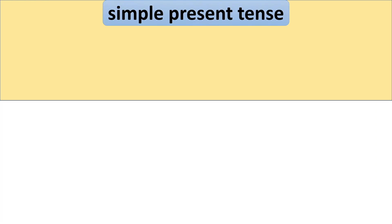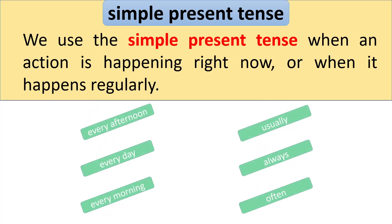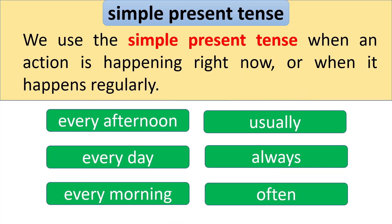Simple Present Tense. We use the simple present tense when an action is happening right now, or when it happens regularly. When you find these time words in a sentence — for example, every day, every morning, every afternoon, usually, always, and often — we need to use the simple present tense.